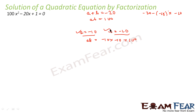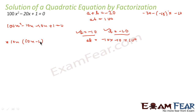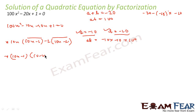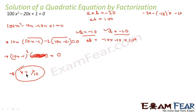So I will write: 100x squared minus 10x minus 10x plus 1 equals 0. Taking 10x common gives 10x minus 1; here taking minus 1 common also gives 10x minus 1 — I took minus 1 common because I wanted to make both parts the same. This becomes (10x minus 1) times (10x minus 1) equals 0, or (10x minus 1) squared equals 0. So x equals 1/10.